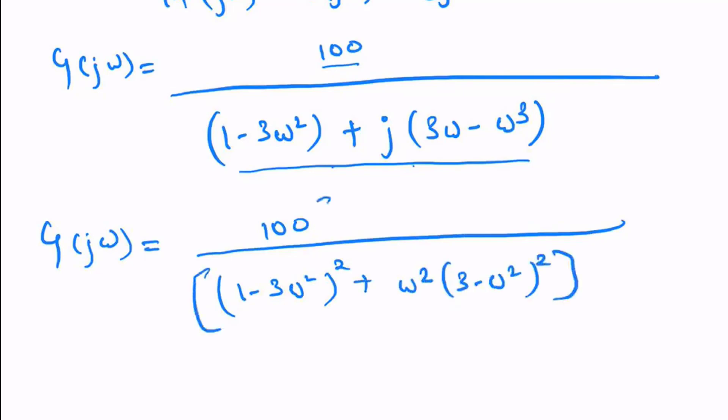In the numerator, multiplying by the complex conjugate gives us [(1-3ω²) - jω(3-ω²)].